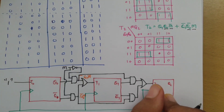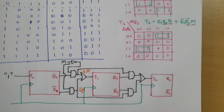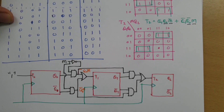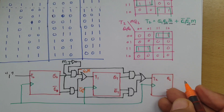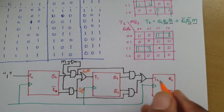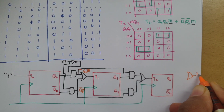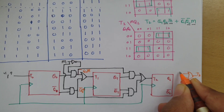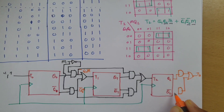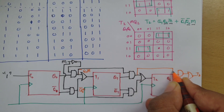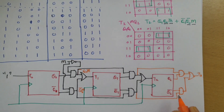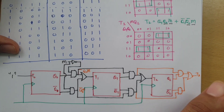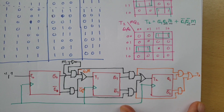For T2, we reuse the existing Q0·M̄ and Q0̄·M terminals. One AND gate takes Q1 and Q0·M̄ to produce Q1·Q0·M̄, and another takes Q1̄ and Q0̄·M to produce Q1̄·Q0̄·M. These feed into an OR gate for T2. This completes the 3-bit synchronous up-down counter circuit.